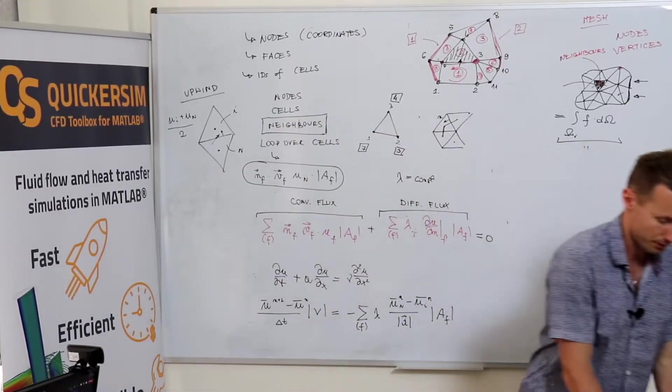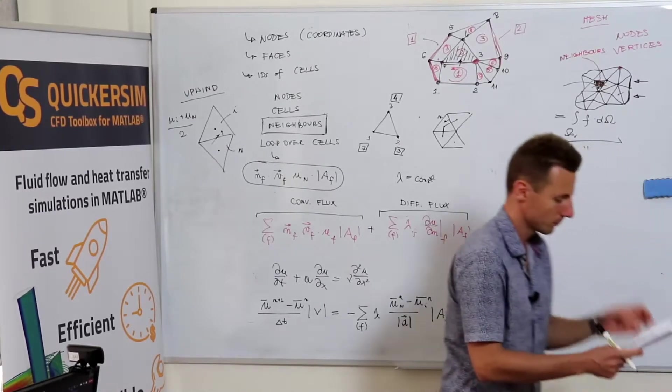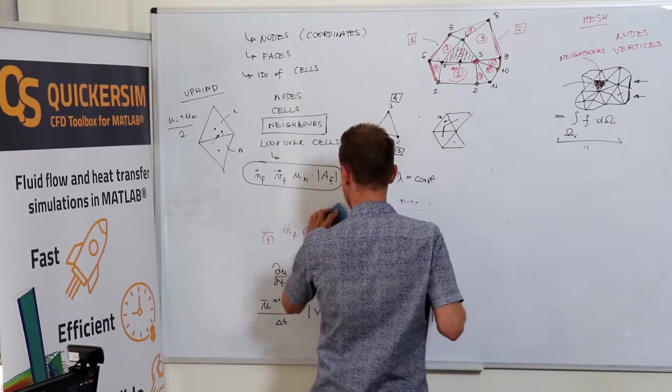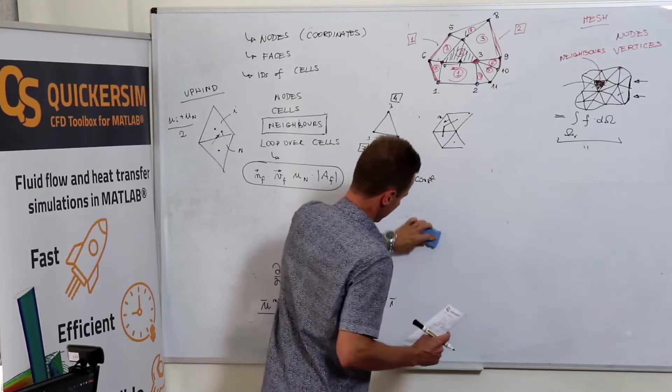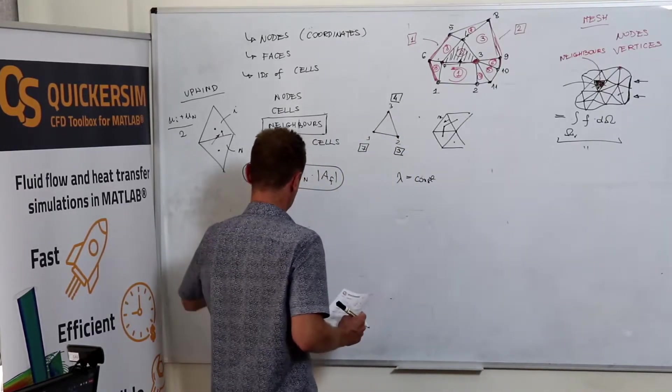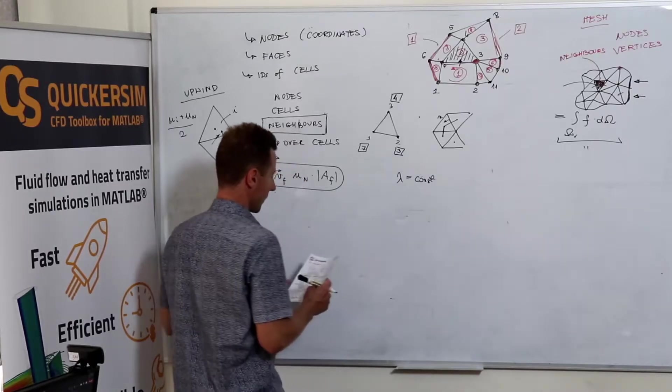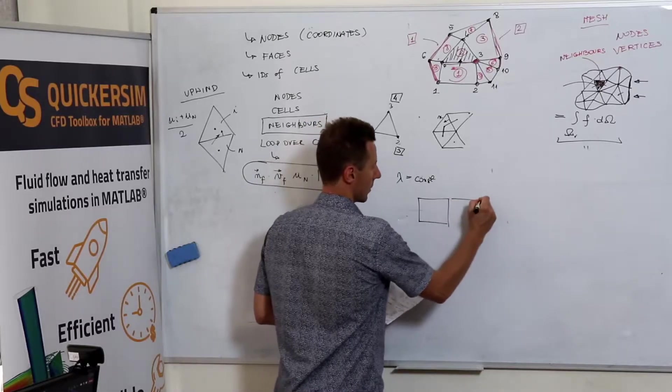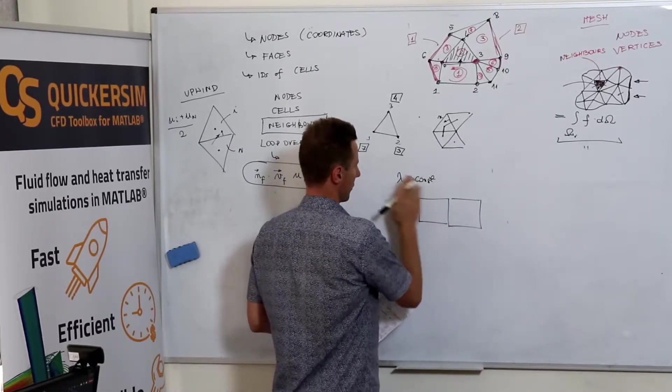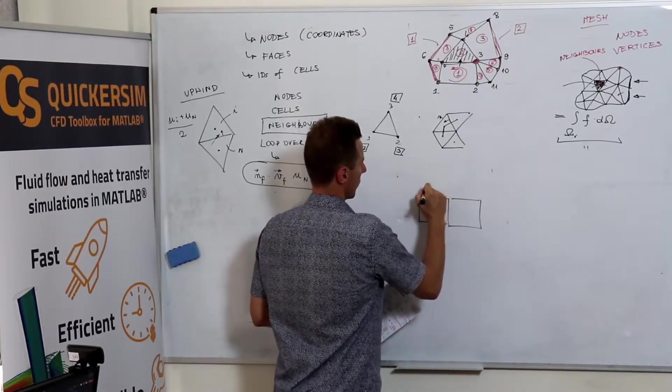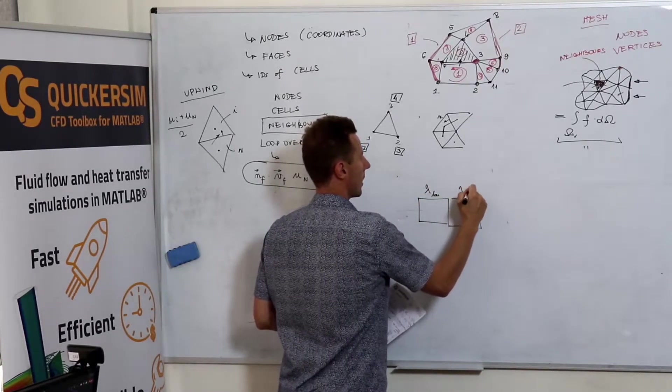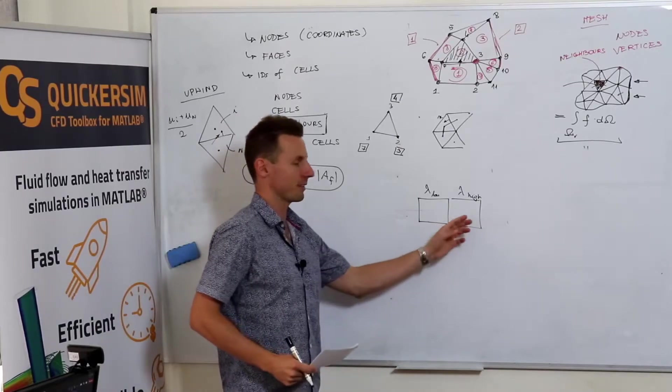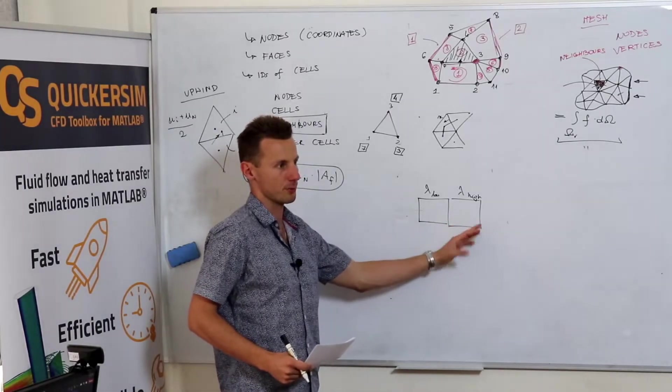The problem is, the problem that I want to address is the following. Imagine that we have two different materials where we've got lambda-low and lambda-high. You can associate it with having two different materials of different conductivities.